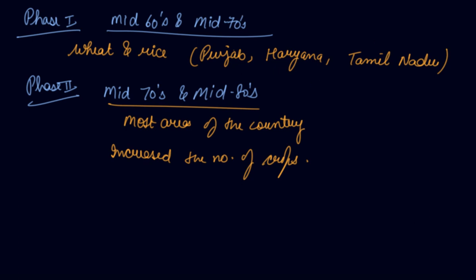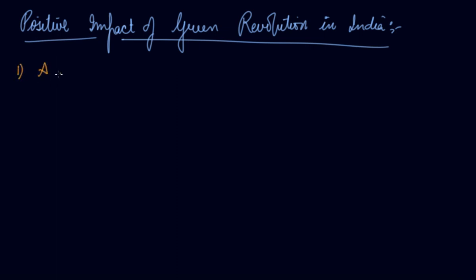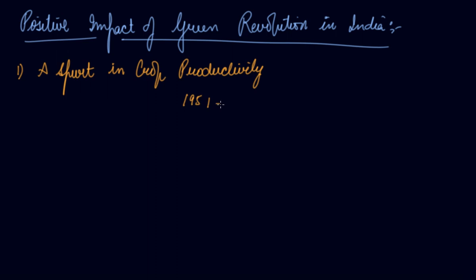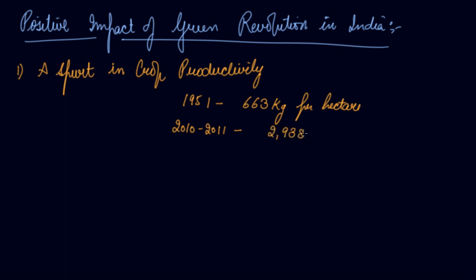The first positive impact of the Green Revolution in India was a spurt in crop productivity. In 1951, crop productivity was about 663 kg per hectare, whereas after the Green Revolution, between 2010-2011, it had increased to about 2938 kg per hectare. This was the productivity of wheat that was analyzed. Indian agriculture was now seen as a vibrant sector of the economy, with various crops produced in very large quantities.